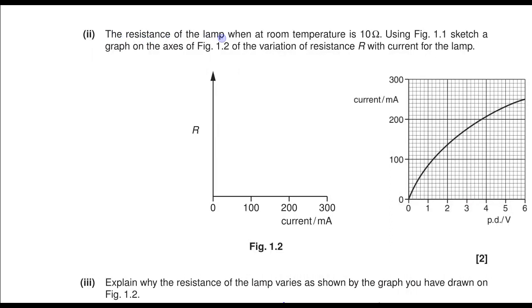The resistance of the lamp when at room temperature is 10 ohms. Using figure 1.1, which is shown here, sketch a graph on the axes of figure 1.2 of the variation of resistance with current for the lamp.